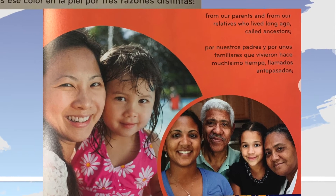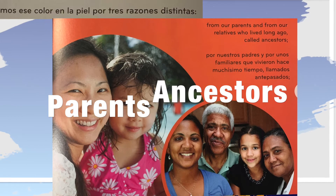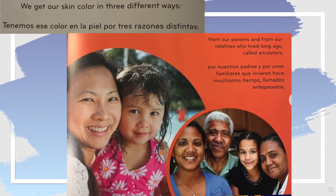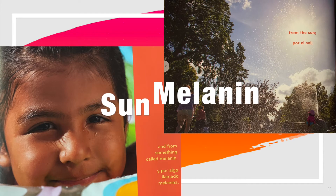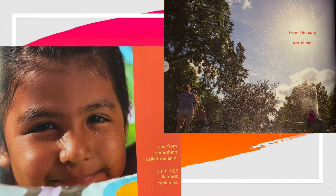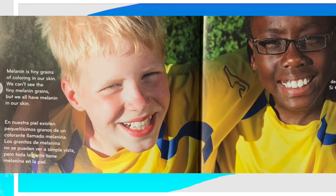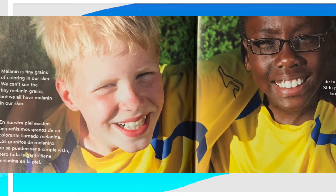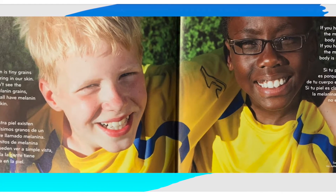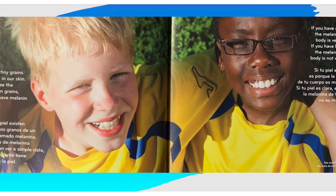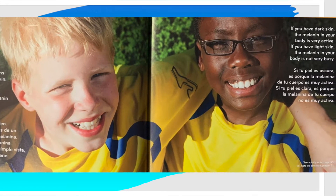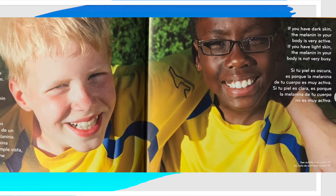We get our skin color in three different ways: from our parents and from our relatives who lived long ago called ancestors, from the sun, and from something called melanin. Melanin is tiny grains of coloring in our skin. We can't see the tiny melanin grains, but we all have melanin in our skin. If you have dark skin, the melanin in your body is very active. If you have light skin, the melanin in your body is not very busy.